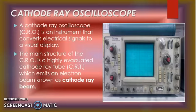CRO is an instrument that converts the electrical signal into a visual signal. We give it an electrical signal or a waveform. It can also convert voice and display it as a waveform. First of all, what is a cathode ray?